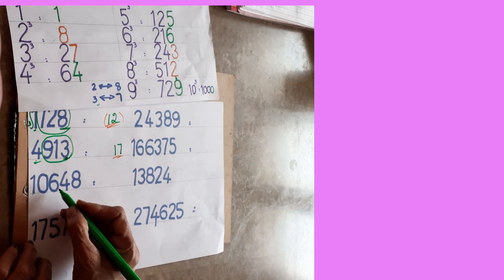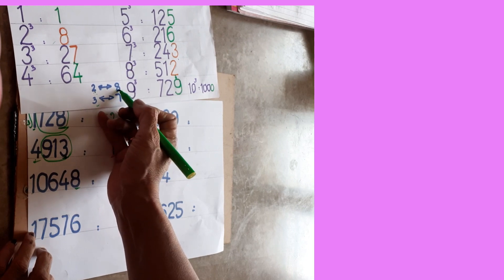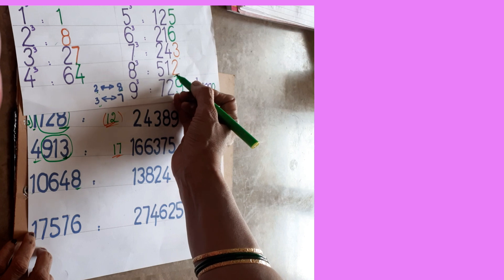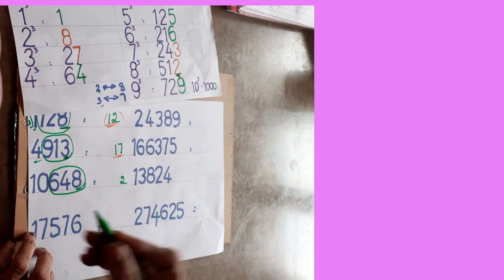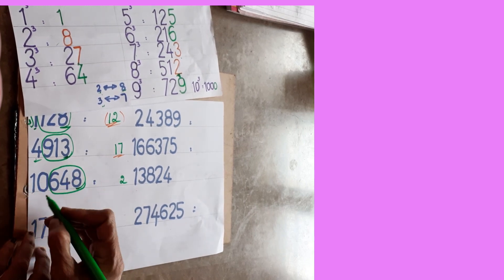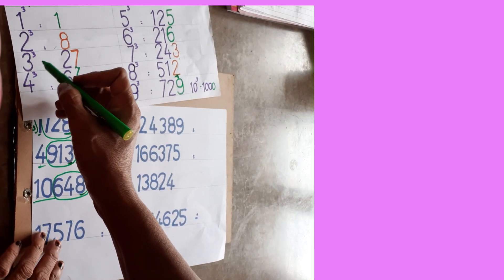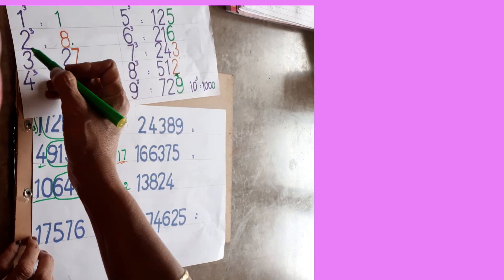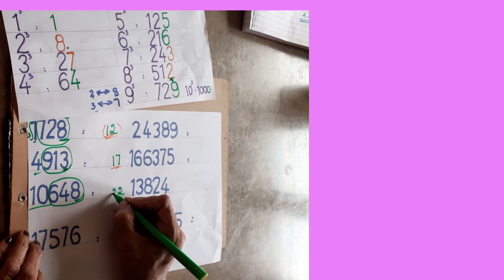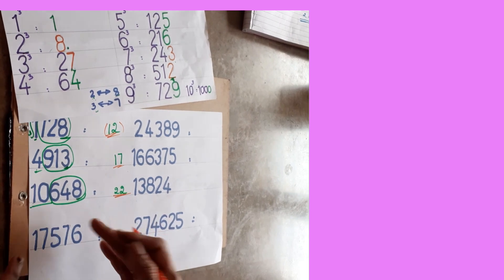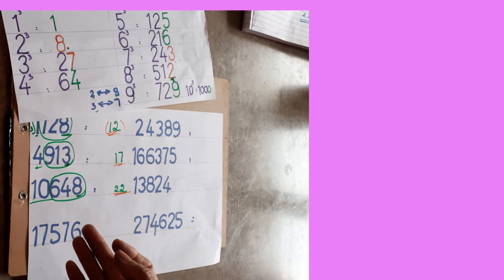Next: 10648. Units place is 8. 8 means reverse: units digit of answer is 2. Write 2. Eliminate last 3 digits — remaining is 10. 10 is nearby which cube? 2 cube is 8, 3 cube is 27 — 27 is more, so take the lesser: 2. Answer is 22. Check: 22 × 22 × 22 = 10648. Practice on 10 sums with your calculator nearby to verify.